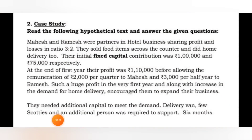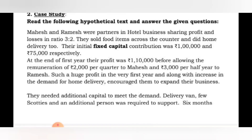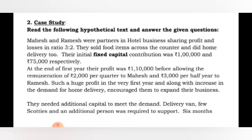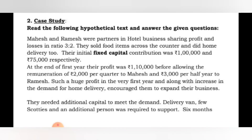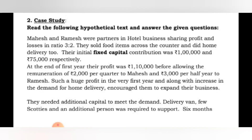Welcome back to my channel Quest for Knowledge. Today we are going to discuss accountancy assignment question number two, which is a case study. Let's first understand the question: read the following hypothetical text and answer the given questions. Mahesh and Ramesh were partners in a hotel business, sharing profits and losses in the ratio 3:2.